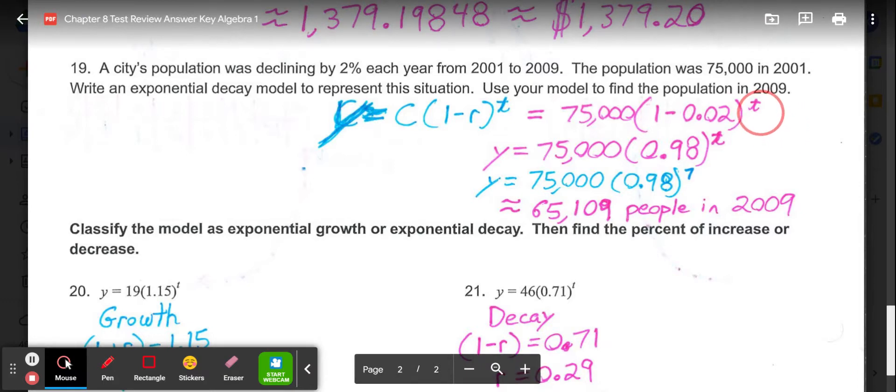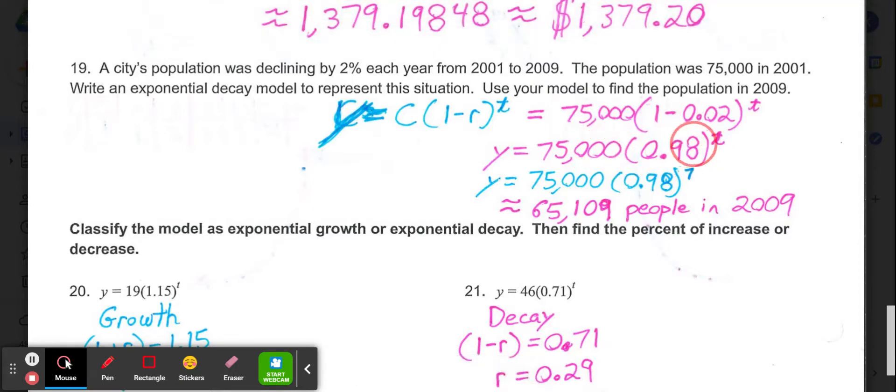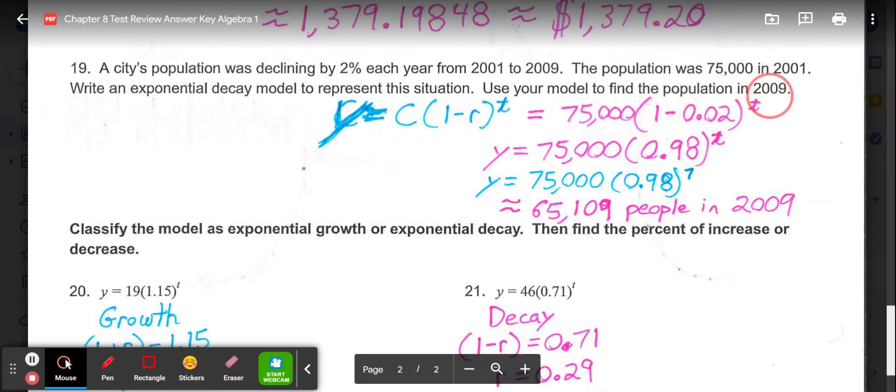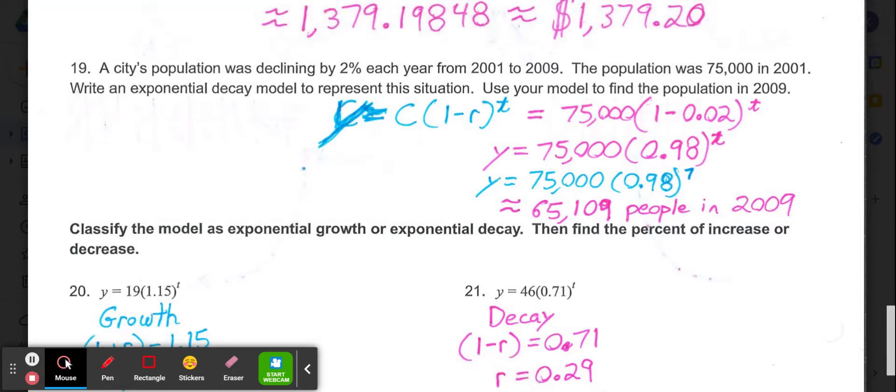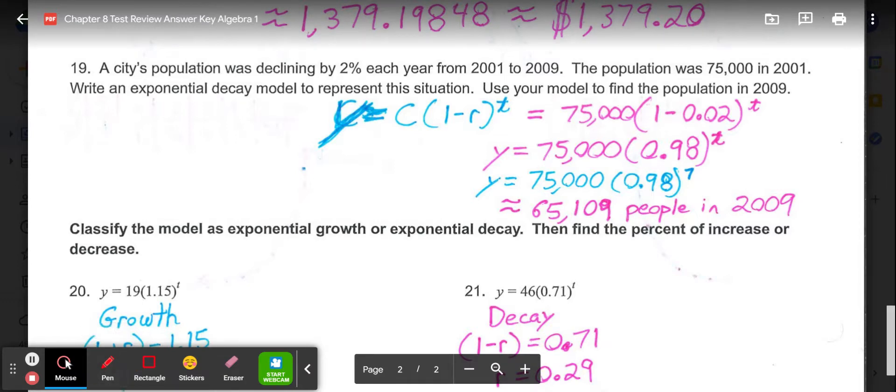So our model would be 75,000, then in parentheses 0.98 to the t. So if we're going for 2009, if we're starting in 2001 and we're predicting for 2009, this right here should actually be 2, not the 7th power, but it should be changed to be the 8th power. So instead of 7 years, 2001 to 2009 is 8 years. So that should be to the 8th power.